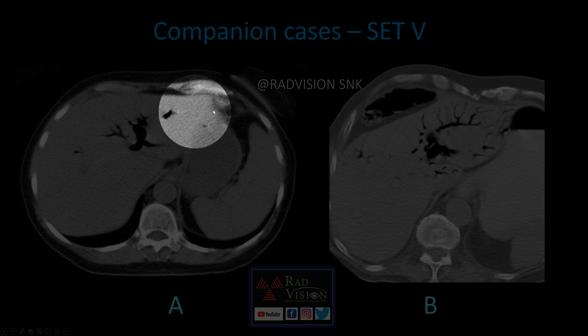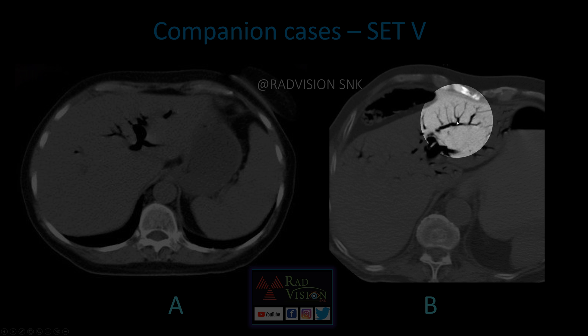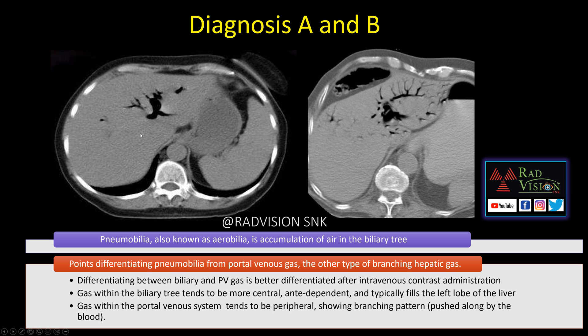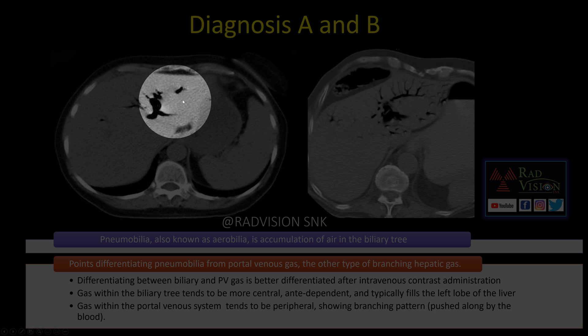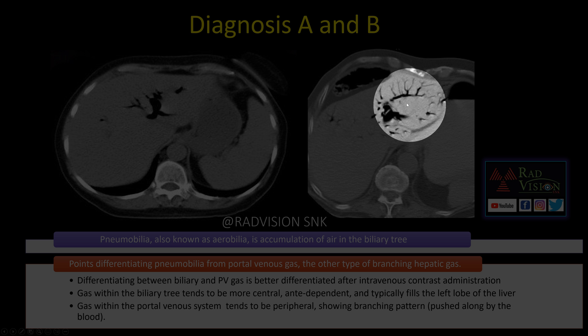Next case: there is central free air in the left lobe of the liver not reaching the periphery — this is pneumobilia. The second case shows free air in both lobes of the liver with a typical branching pattern reaching up to the periphery — this is portal vein gas. After IV contrast, the gas position does not change in pneumobilia, but portal vein gas changes position after IV contrast. Central free air, no branching pattern, not reaching periphery, typically in left lobe — remember pneumobilia.